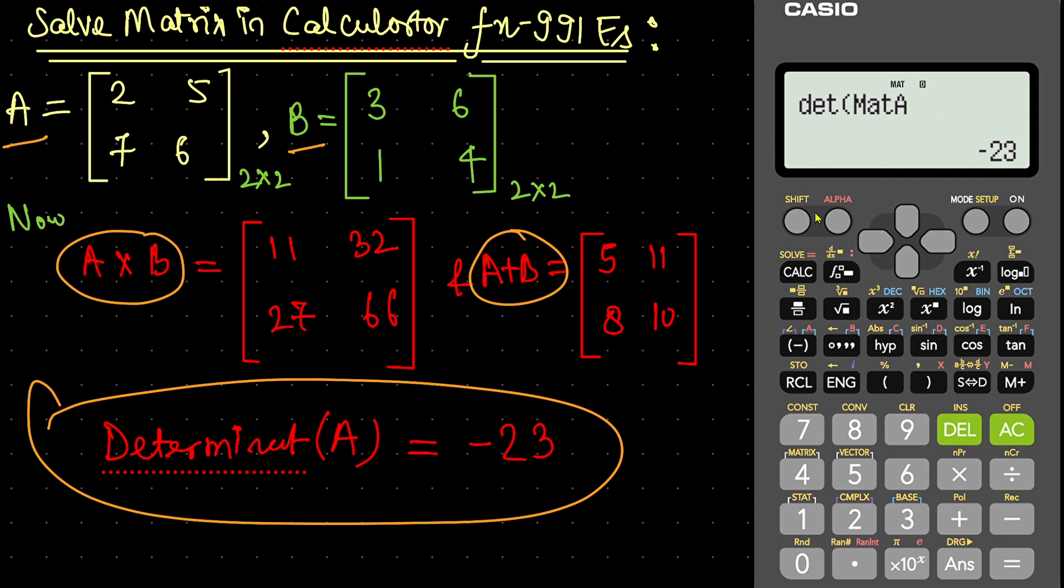Now, here comes a bonus part. Especially for your reference. We can calculate determinant of A into B also. Now what we do is press shift. Matrix. Then set determinant, which is for 7. Now, again shift. Matrix. Matrix of A, 3. Into shift. Again matrix. Matrix of B, on 4. Now, close the bracket. It will calculate the determinant of A into B.